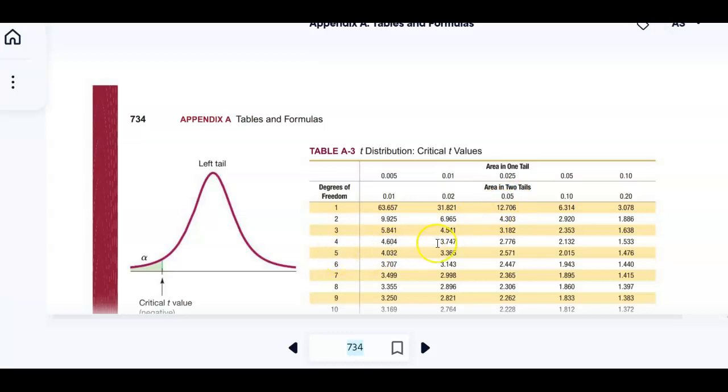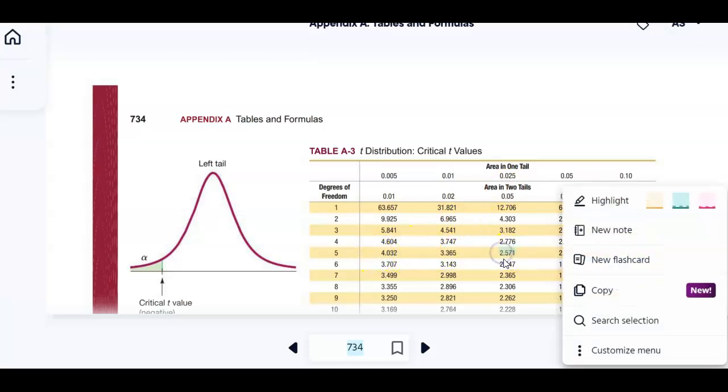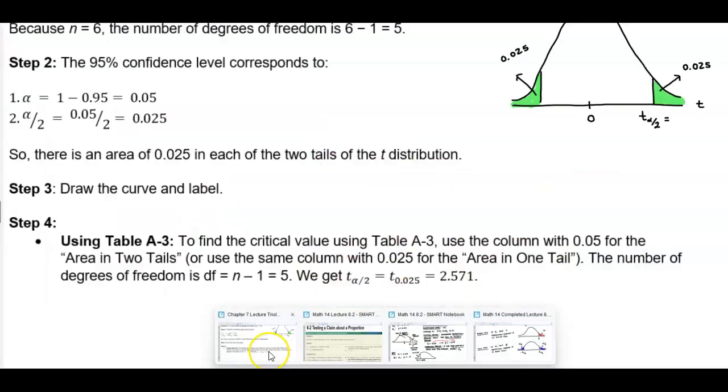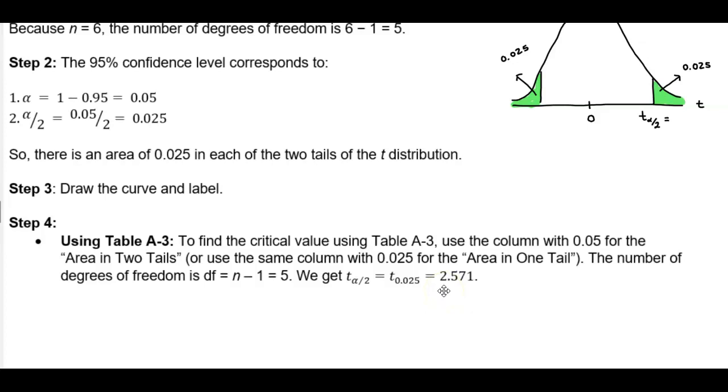Now we're looking at 5 degrees of freedom and 0.05. If we go across here, we're going to see the value of 2.571. And therefore, that's what we get for our critical value: 2.571.